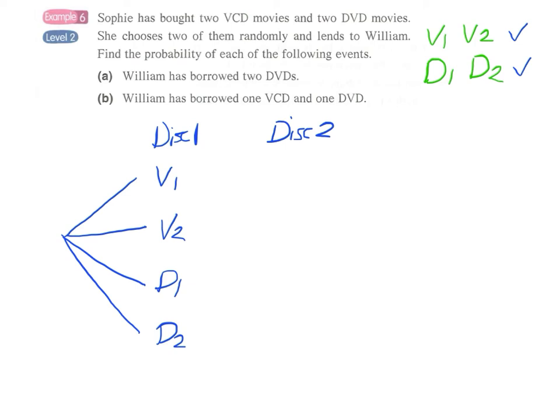So actually when we come to disc 2 we only have three choices therefore we have V2, D1 and D2 and we can complete these three branches here.